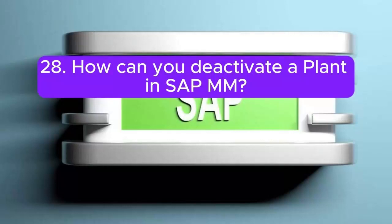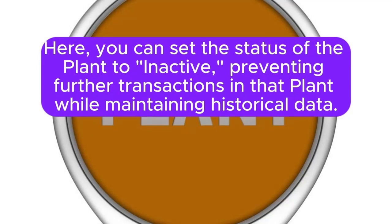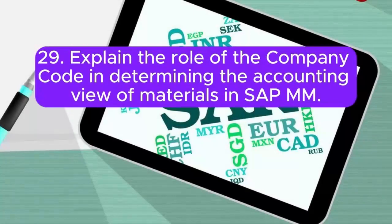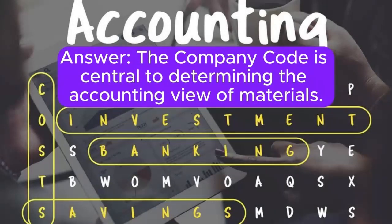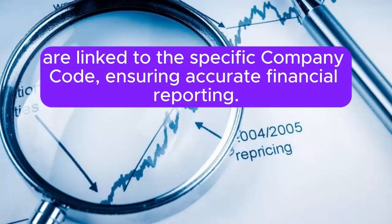Question 28: How can you deactivate a plant in SAP MM? To deactivate a plant, you can use transaction code OM9 in the SAP IMG. Here, you can set the status of the plant to inactive, preventing further transactions in that plant while maintaining historical data. Question 29: Explain the role of the company code in determining the accounting view of materials in SAP MM. The company code is central to determining the accounting view of materials. All financial transactions, including material valuation and accounting entries, are linked to the specific company code, ensuring accurate financial reporting.